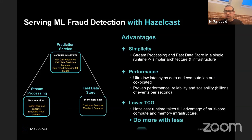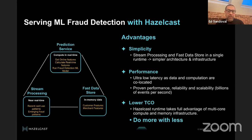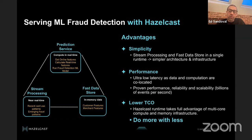With Hazelcast, the key difference is that stream processing, fast data store, and pipeline computation come together into a single runtime. This not only simplifies the architecture but lowers TCO. Running in a single runtime that takes advantage of all cores and memory of a given infrastructure provides all the technical capabilities needed with less infrastructure. The key to achieving that performance improvement is co-locating the fraud detection pipeline computation with the fast data store and running them on the same node.